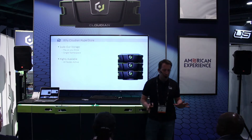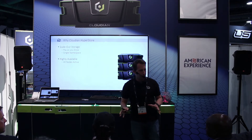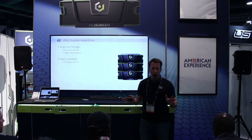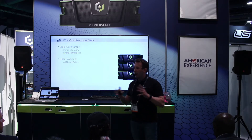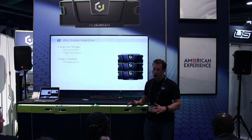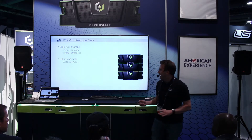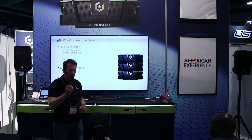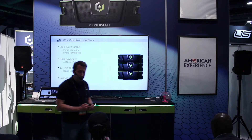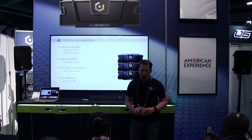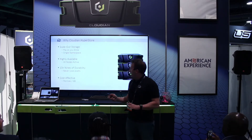You're in the Cloudian booth and I just want to start off by making sure everybody knows what Cloudian does. Cloudian is a scale-out object storage system. They do 100% compatible Amazon S3 storage. It's highly available — every node is always active. It is the most tolerant system you're going to find for durability. You can lose drives, you can lose entire nodes, and you're never going to lose a piece of data. And at the end of the day, it's probably the most cost-effective option — you're talking pennies per gigabyte a month.